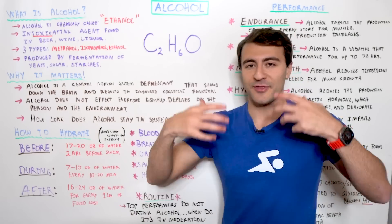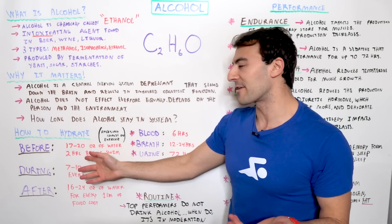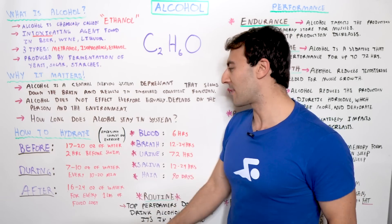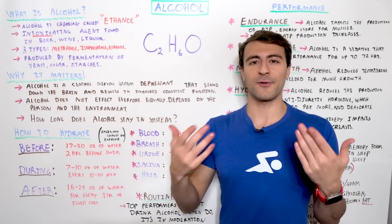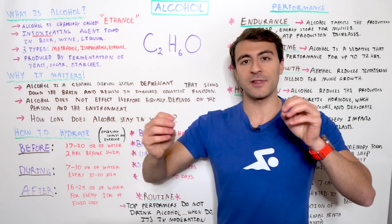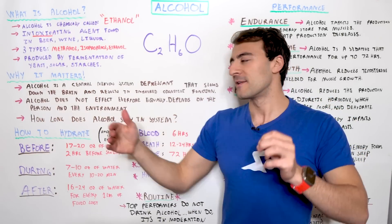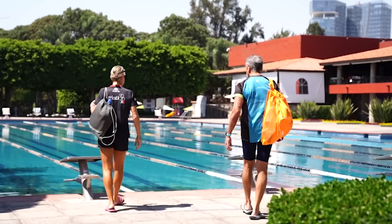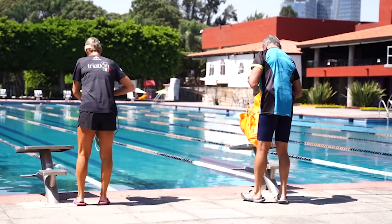When you see these kinds of stats, that doesn't mean go and chug two and a half cups of water all at once — eight ounces of water is one cup. You want to be drinking in moderation and maintaining a consistent level of hydration throughout the day, so that by two hours before your swim, you will have had enough fluids to get you into the pool and through that workout.